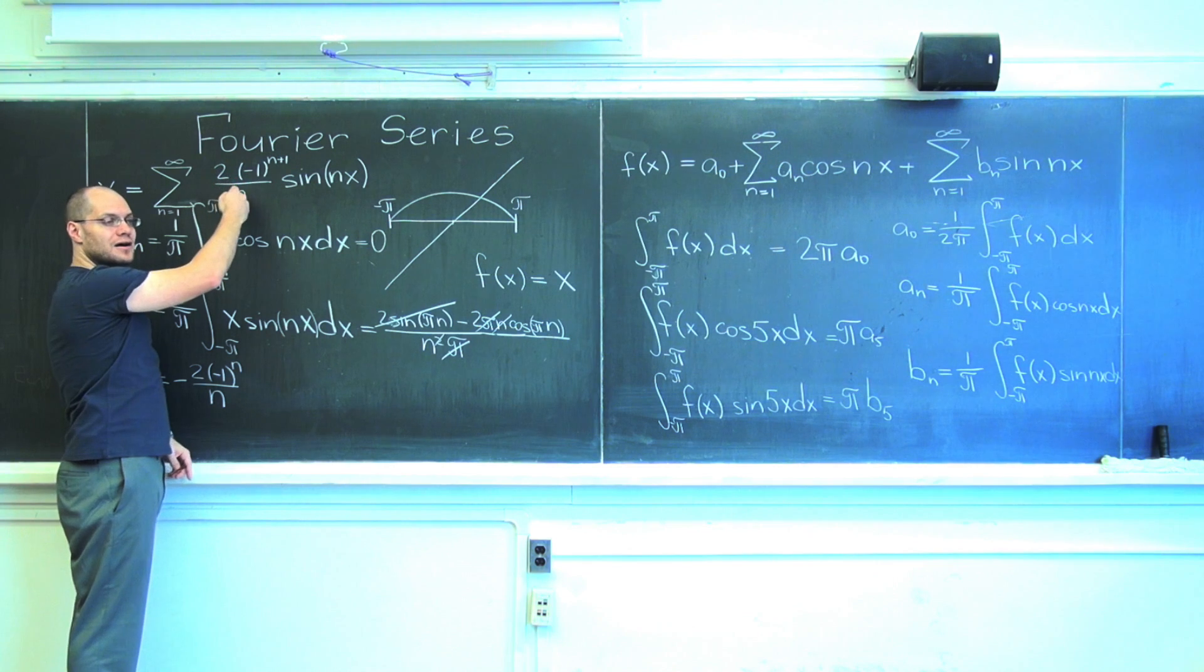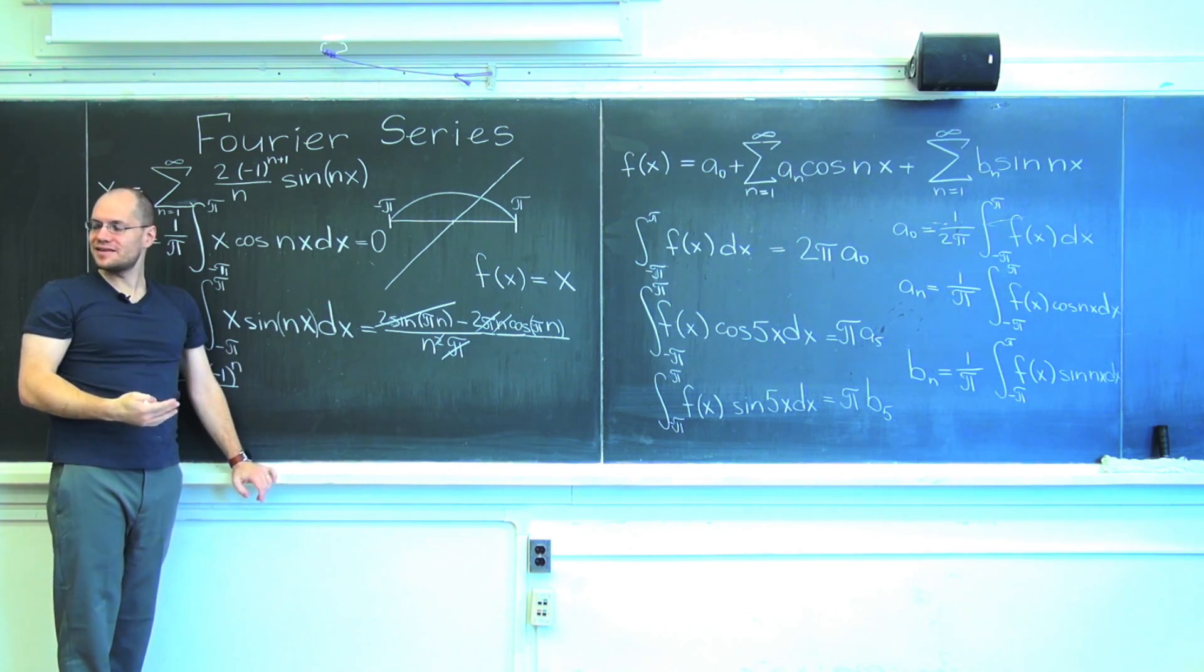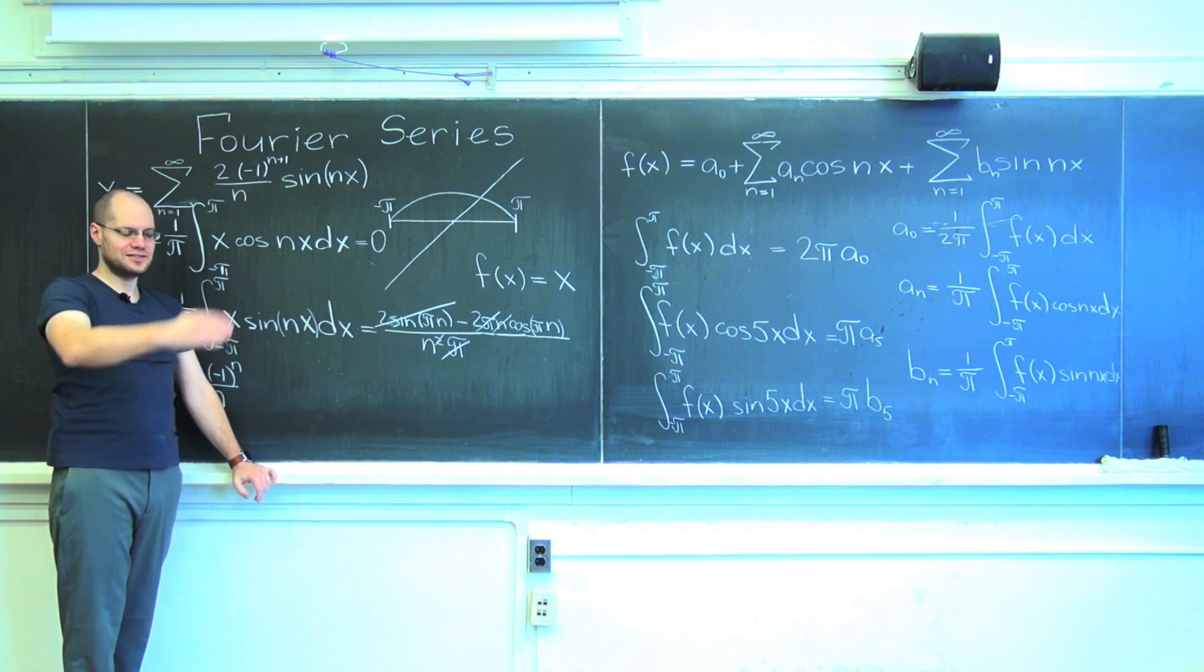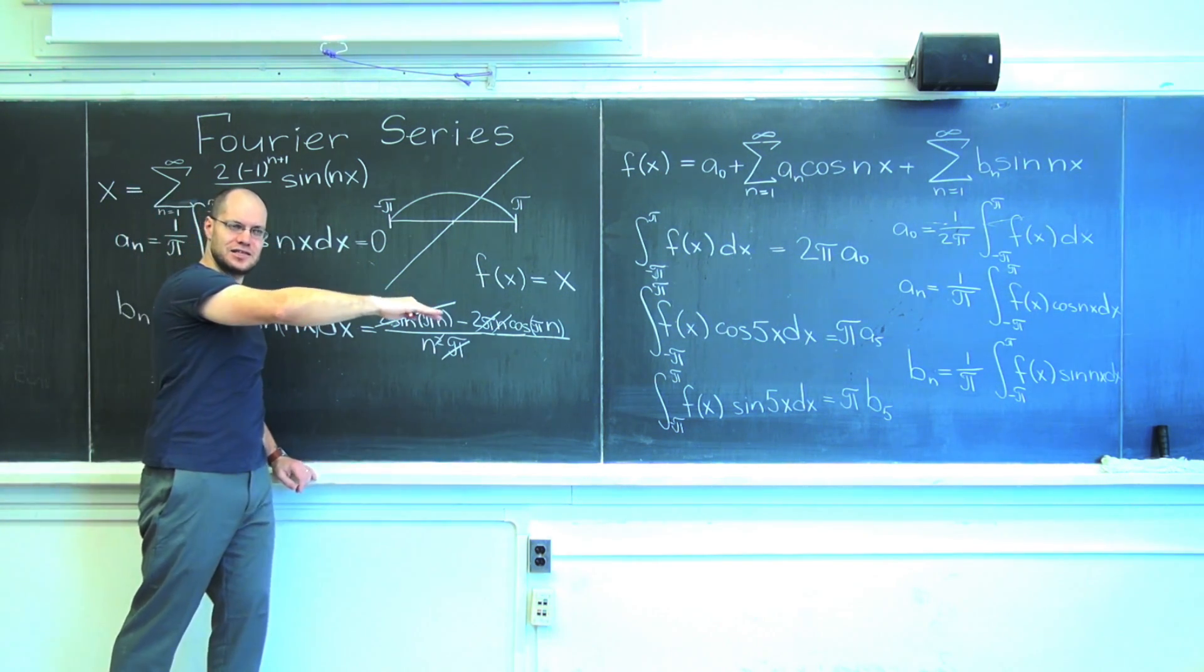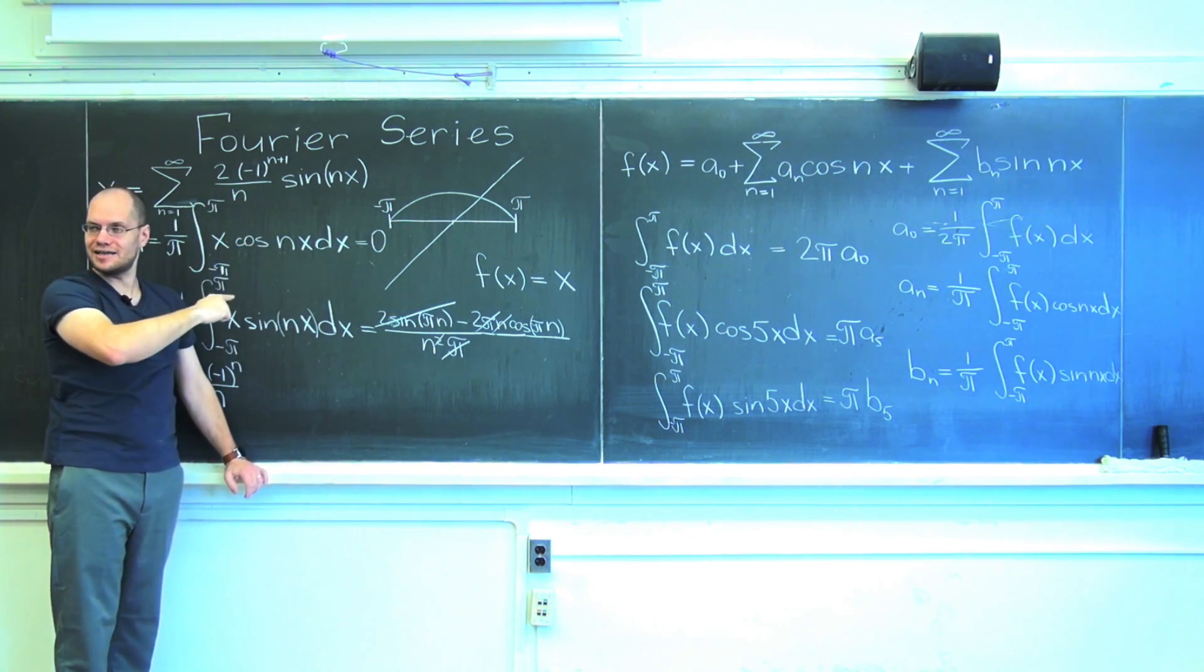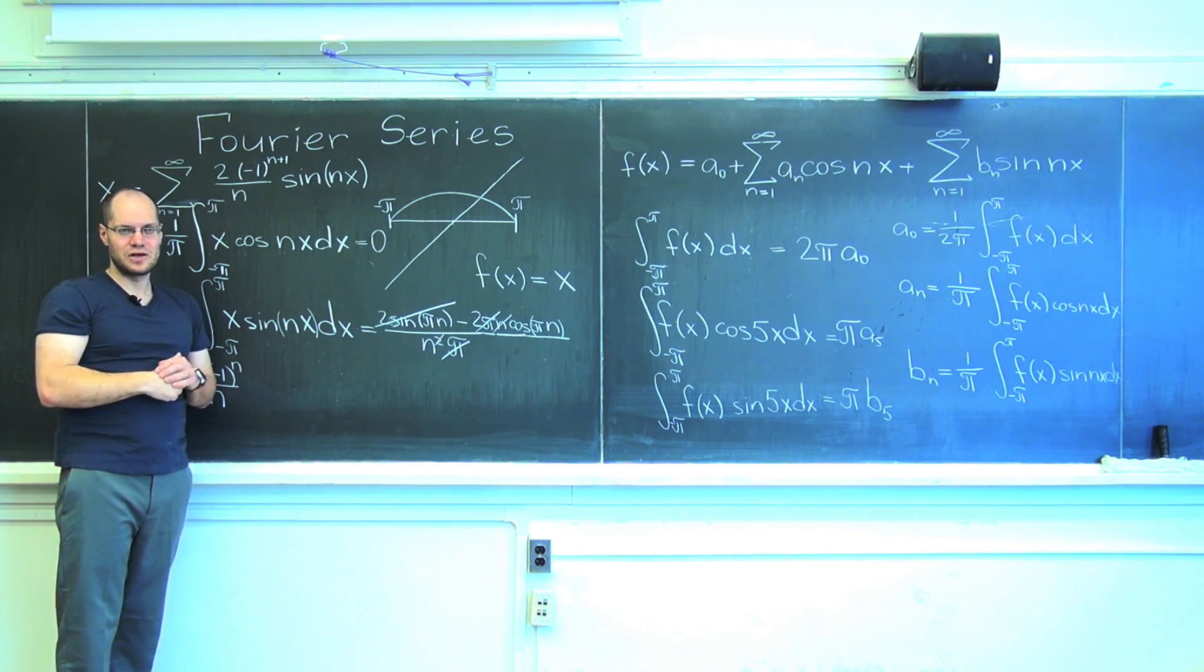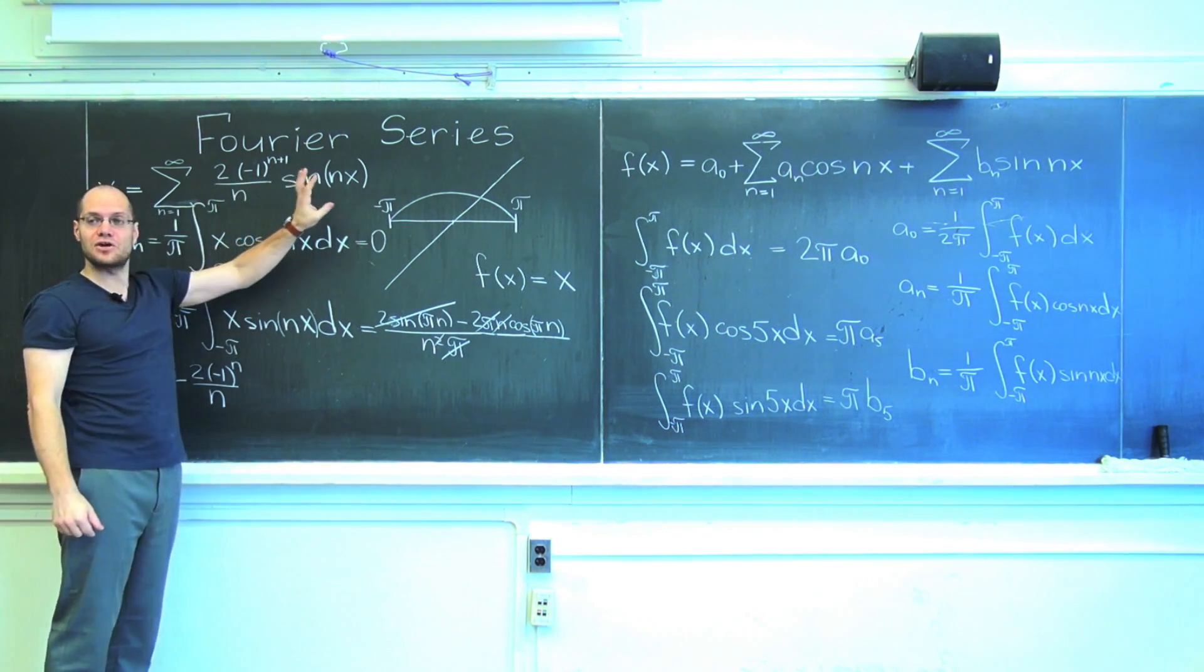Because when you have sum of one over n, that's a series that diverges. When you take a monotonically decreasing sequence that alternates signs, then convergence is guaranteed.